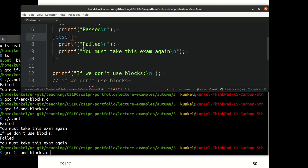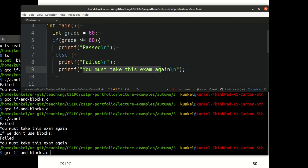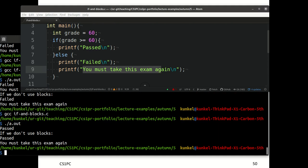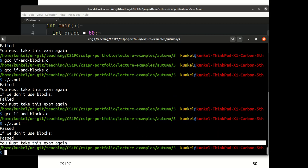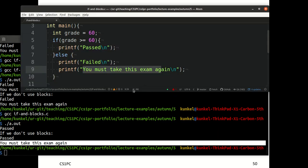In this case, we have it inside the block. We get failed and you must take this exam again only if the grade is smaller than 60. But how about the second case? We get passed as we wanted. But if we don't use blocks, we get passed and you must take this exam again. Why is that?